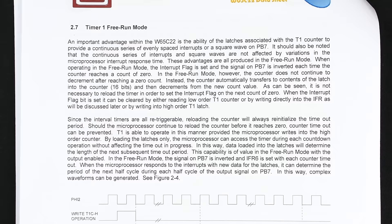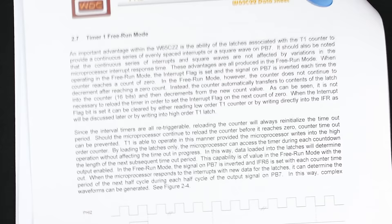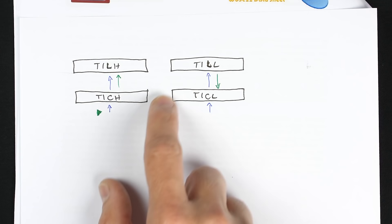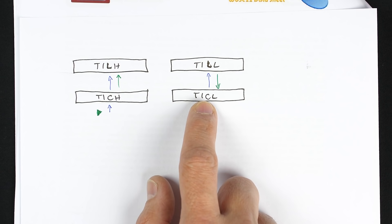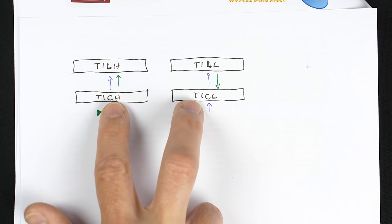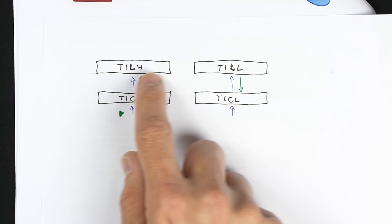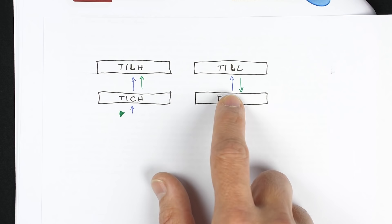That brings me to the second mode: free-run mode, set by setting the T1 timer control bits in the ACR to 0b01, which gives continuous interrupts. In one-shot mode, the counter counts down to zero and you get notified. In free-run mode, when the counter gets to zero, you get notified and it immediately restarts by loading the latch values back into the counter. That's where having a separate latch is valuable — it specifies what the counter should reset to.